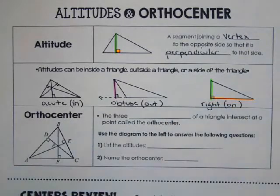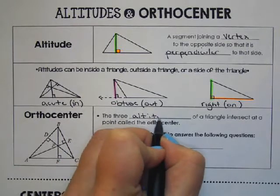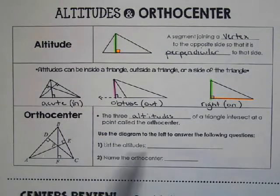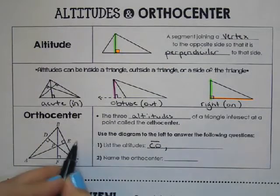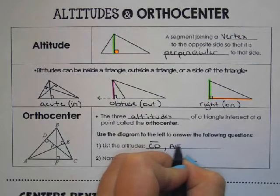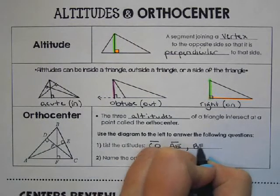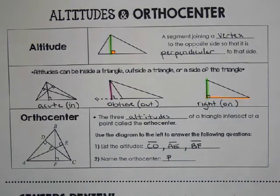The three altitudes intersect at the orthocenter. So the altitudes of this triangle would be CD, AE, and BF. And the orthocenter would be point P. So that's really pretty much all we do with those for now, but when we talk about altitude, that'll be in some future chapters.